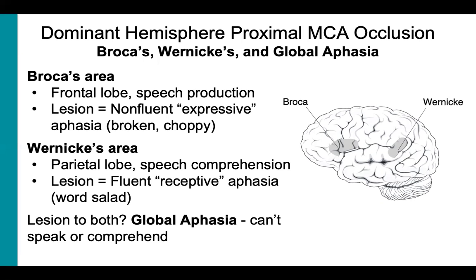When both Broca's and Wernicke's areas are lesioned, as in a proximal M1 segment stroke, the patient may have combined effects producing global aphasia. These patients may only be able to produce and understand a handful of words.